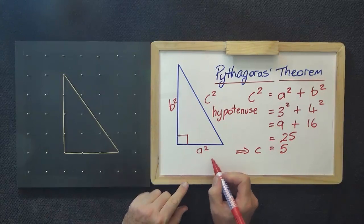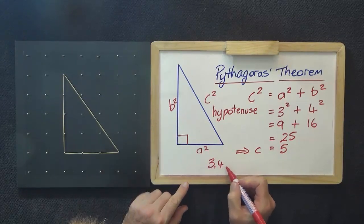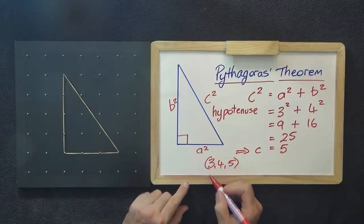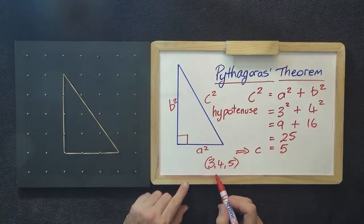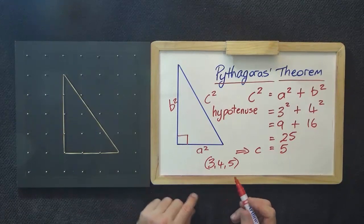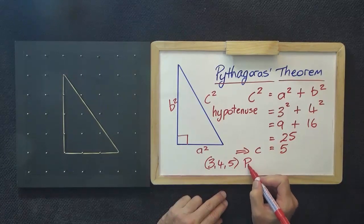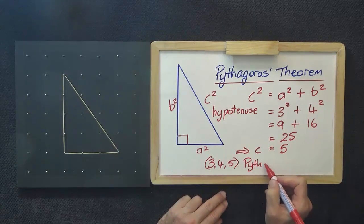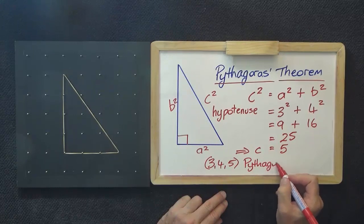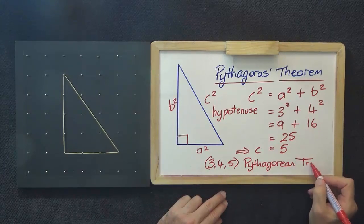This gives us a triangle of 3, 4, 5. Now, isn't that neat? All 3 are whole numbers in this case. And that is called a Pythagorean triple, after the man.